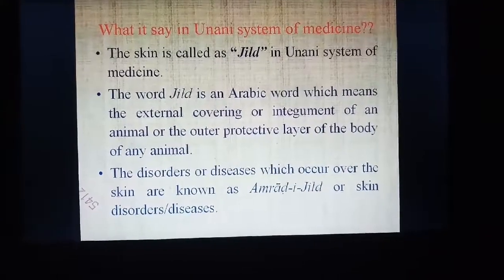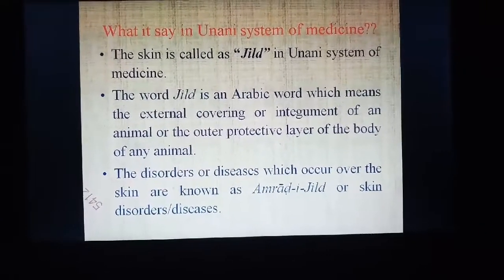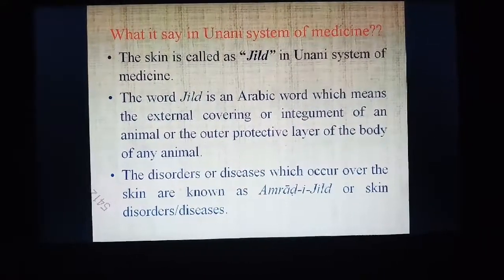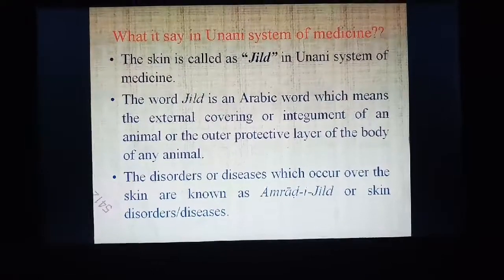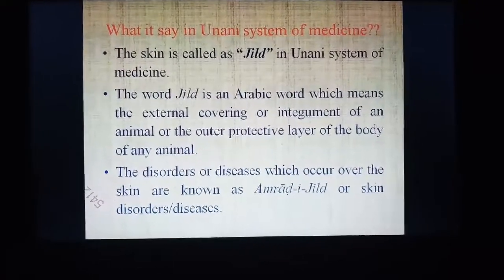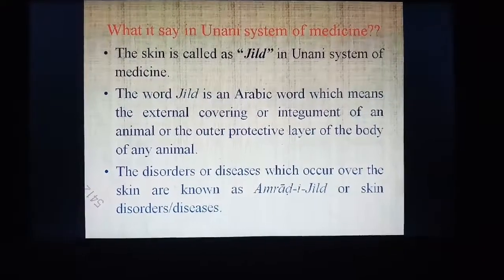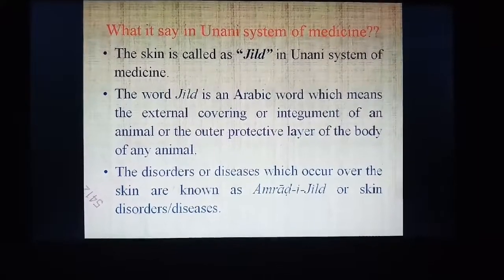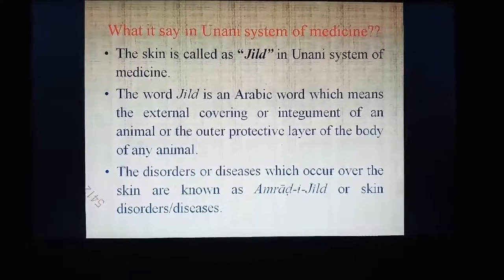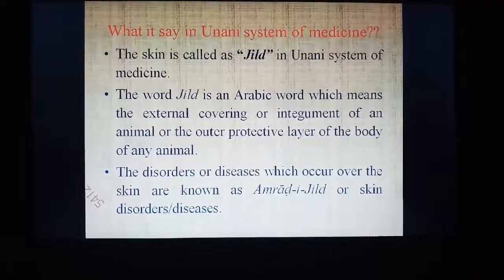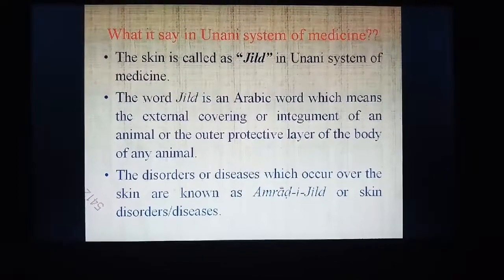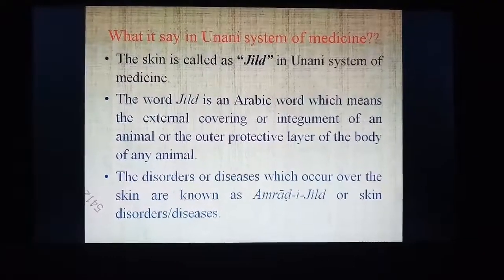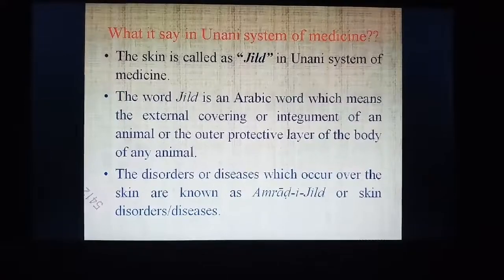The skin is called 'jild' in the Unani system of medicine. The word jild is an Arabic word which means the external covering or integument of an animal, or the outer protective layer of the body. The synonyms of the skin are jild and integument. Disorders or diseases occurring over the skin are known as amraz-e-jild, or skin disorders, also called dermatological disorders.